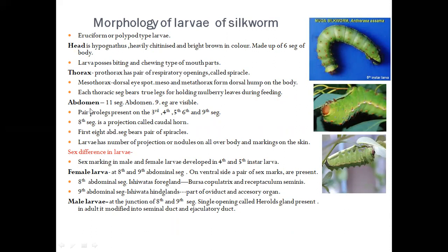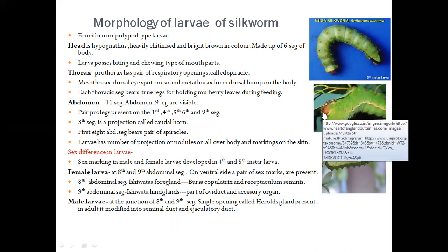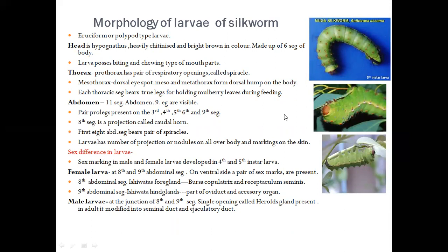The head is hypognathous, meaning the head is directed downwards. It is heavily chitinized and bright browny in color. It is made up of six segments. The larva possesses biting and chewing type of mouthparts, because the larva is a feeding stage and its main work is eating.